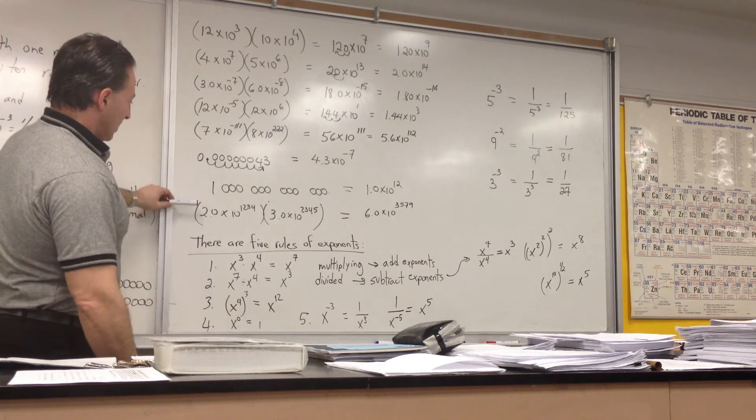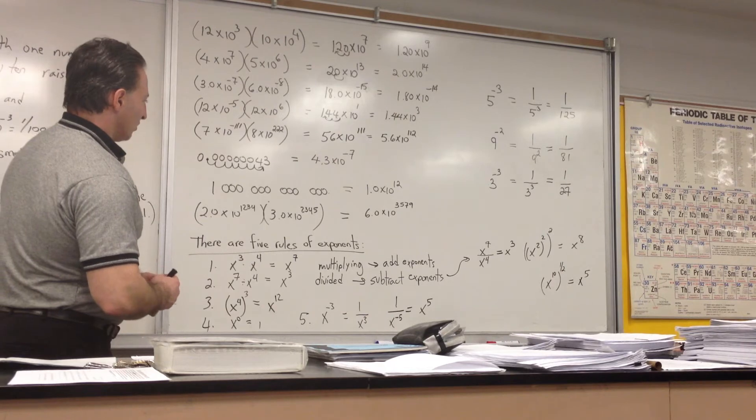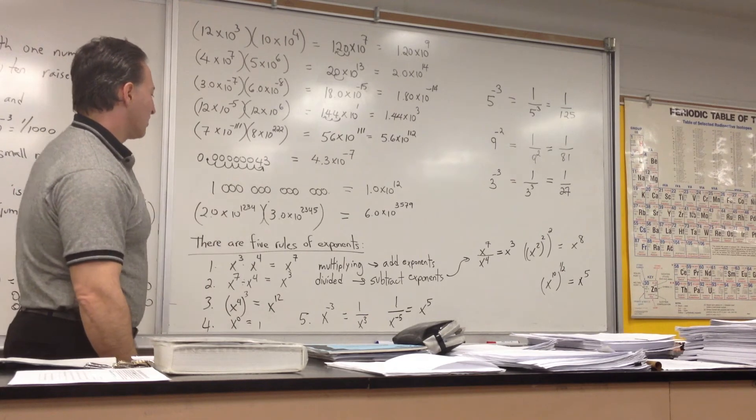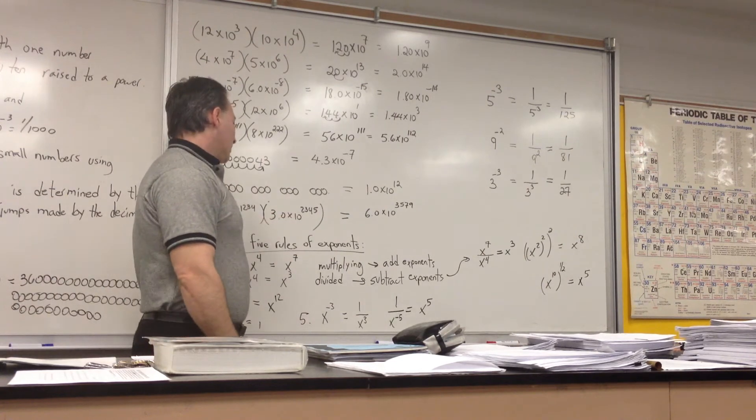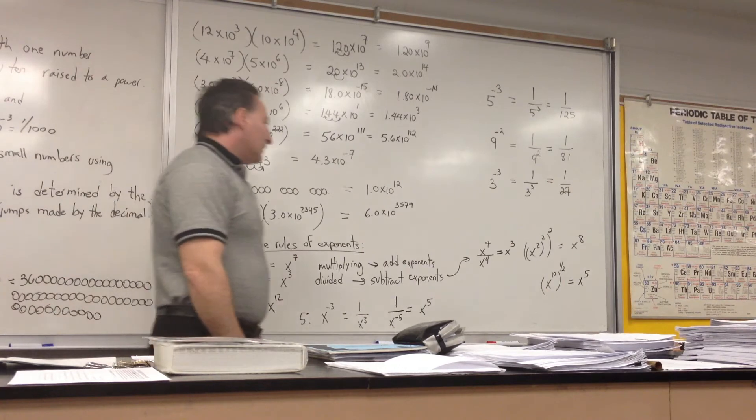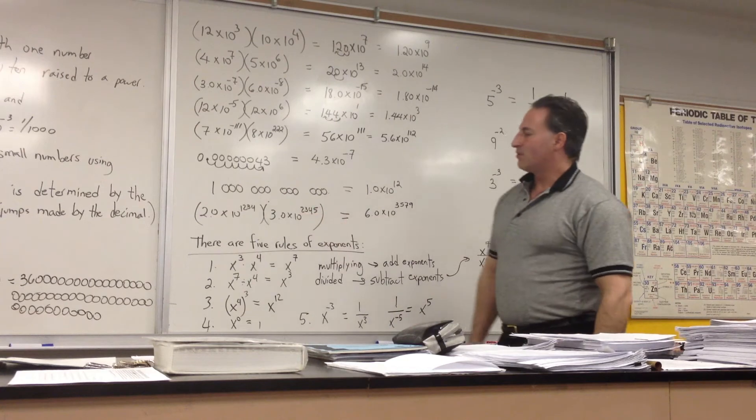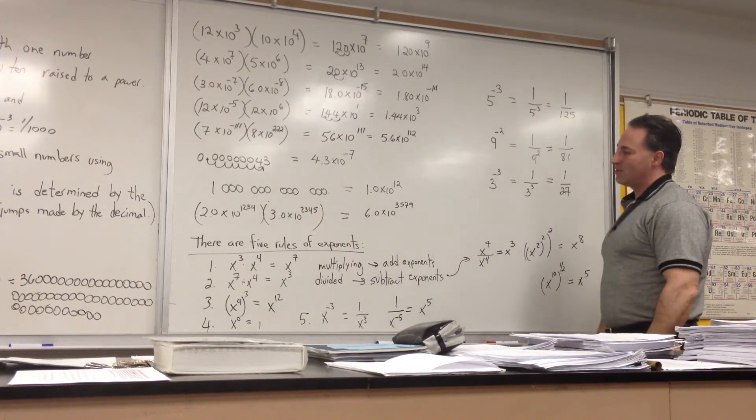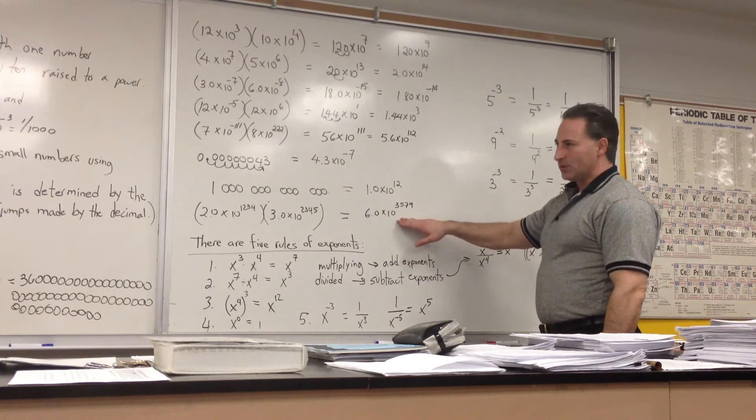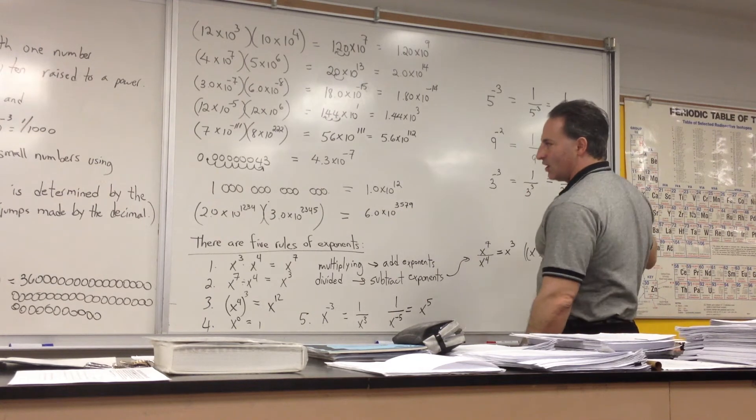And here's another one that has a huge number that would be completely useless for most mathematical applications. You'll never use a number this big, but it's just an exercise. 2.0 times 10 to the 1234 times 3 times 10 to the 2345. Your calculators can't do this, but you get 2 times 3, which equals 6. And if you add these two numbers, 1234 plus 2345 gives you 3,579. So that's your exponent. If you were to write this number out, you would have a 6 with 3,579 zeros following.